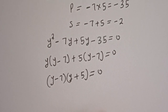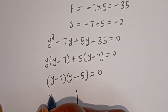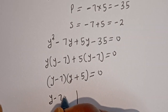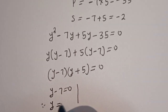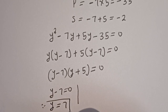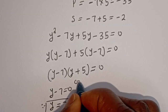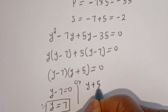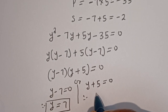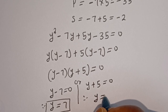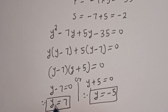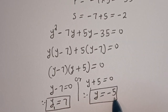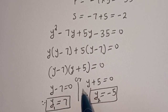There are two cases. The first case: y minus 7 equals 0, therefore y equals 7. The second case: y plus 5 equals 0, therefore y equals minus 5. So y₁ equals 7 and y₂ equals minus 5. Now we can solve for x.